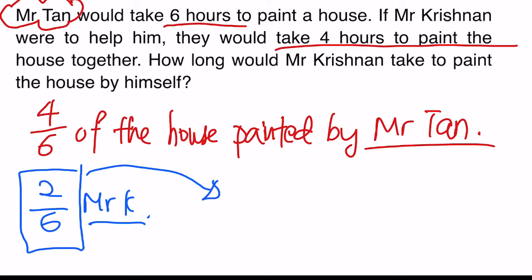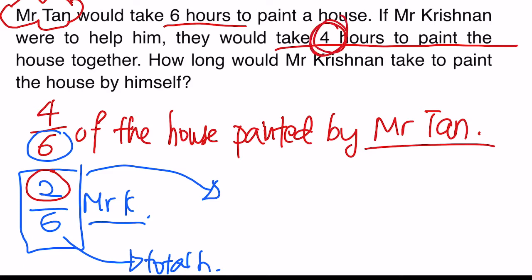The bottom denominator — what does it denote? It denotes the total hours if Mr. Krishnan were to paint by himself, just like what we have done for Mr. Tan. The six hours in the denominator is the total time he takes to paint the house by himself. But the top number, which is two, is the time that he took to paint together with Mr. Tan. The question says that both of them combined took four hours.